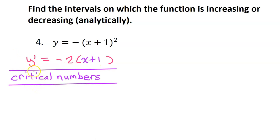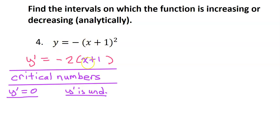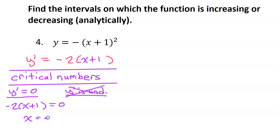In order to determine where y prime is positive and negative, we're going to need the critical numbers. In general, the critical numbers occur when y prime is equal to 0, or when y prime is undefined. However, this is a polynomial equation, so there is nowhere that y prime is undefined. So we will just focus on finding where y prime is equal to 0. Setting this equal to 0, I have negative 2 times x plus 1 equals 0, which tells me by the zero product property, x equals negative 1. So this is my only critical number.